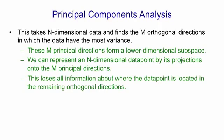So we've lost all information about where the data point is located in the remaining orthogonal directions. But since these don't have much variance, we haven't lost that much information.